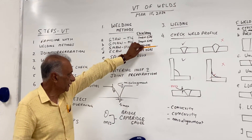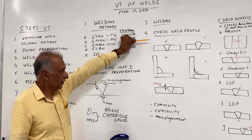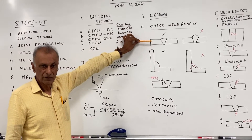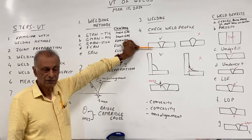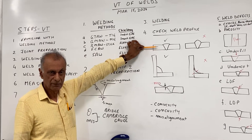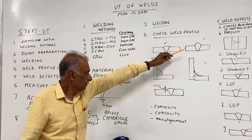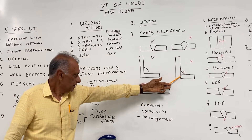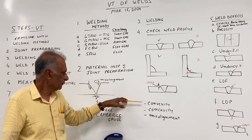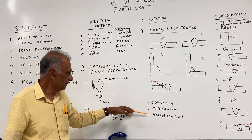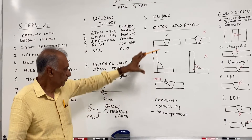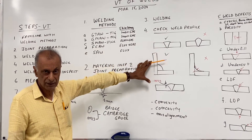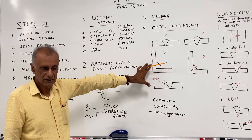Once the weld is complete, we check the weld profiles. The weld profiles are given in the code and we have to make sure they meet the code requirement for reinforcement and maximum reinforcement. Here, if this does not meet, it's a reject. We also check throat — insufficient throat — and then convexity, concavity, and misalignment. These are the welding joint profiles, so that's the first step: making sure the weld meets the profile sizes.